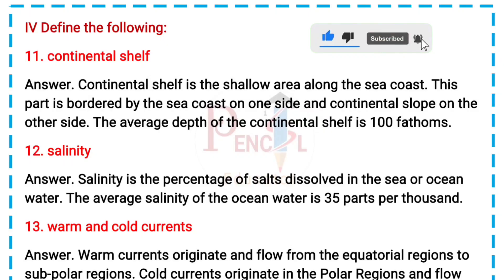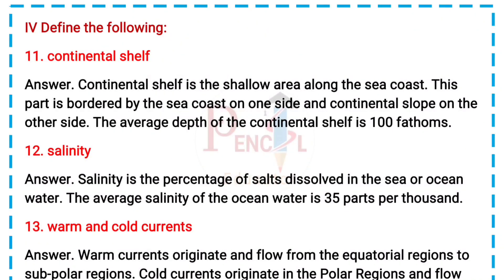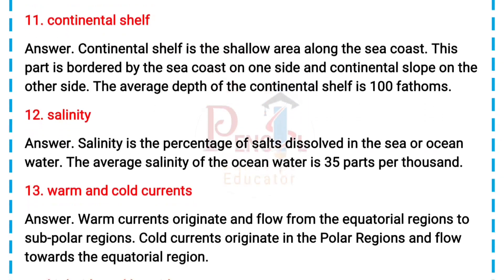12. Salinity. Answer: Salinity is the percentage of salts dissolved in the sea or ocean water. The average salinity of the ocean water is 35 parts per thousand.